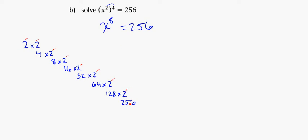So 2 times itself 8 times is going to get us 256. So my answer here is going to be x is equal to 2, because if I times 2 by itself 8 times, I get 256.